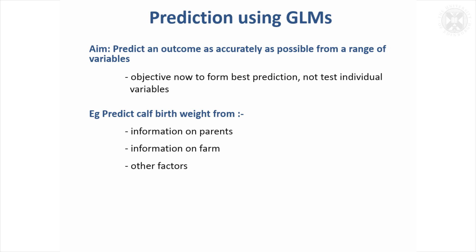The last use — I won't do an example just now — is predicting using general linear models, but we'll look at that for one of the other techniques after the break. Just to draw your attention to the fact that we had a predictive model using multiple regression, but now we can bring in factors as well — categories and groupings of the data — into a prediction model.